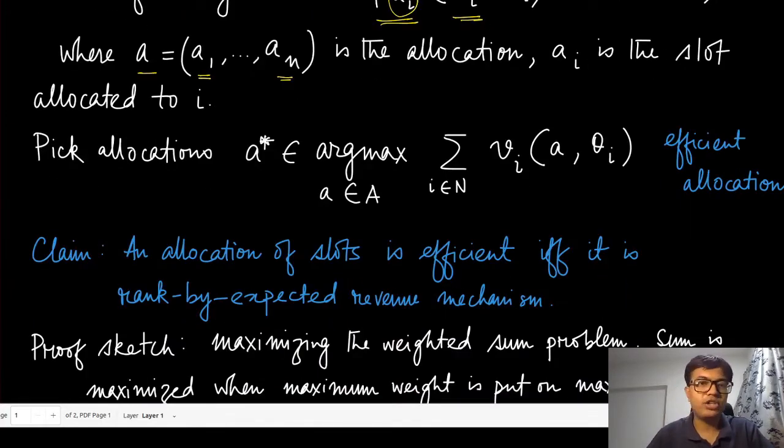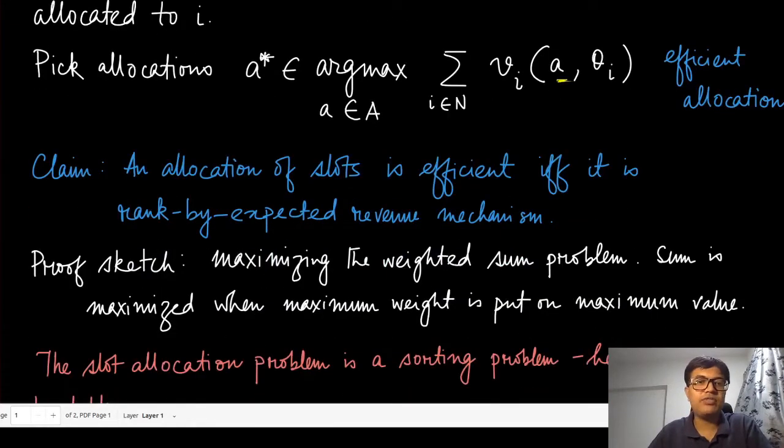Because we are looking at efficient allocations, we are going to pick the allocation which maximizes the sum of the valuations of these agents. This is the same as the VCG mechanism as we have done before. The claim is that if you are doing this kind of allocation, the efficient allocation is ranked by expected revenue mechanism.